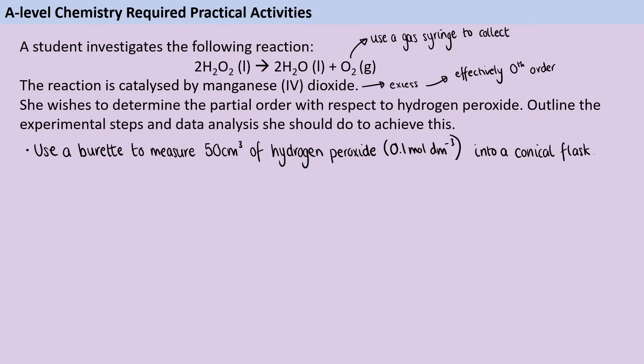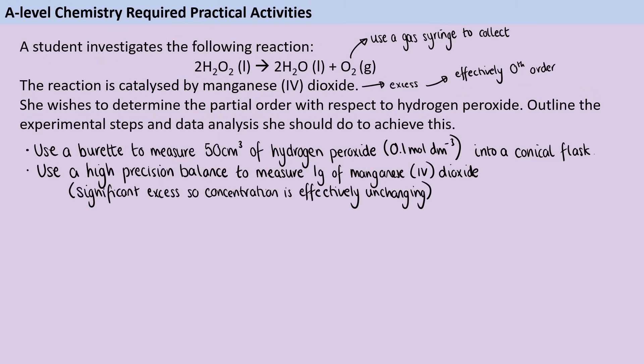Strictly speaking, we don't really care how much there is as long as there's a really large excess. But I would say that whenever you talk about measuring a mass in chemistry, it's always worth leading with using a high precision balance, even if you don't really need one, because if you get into that habit, you're not going to forget it when it is important. So we're going to use our high precision balance to measure out a gram of manganese dioxide, which is way more than you need. It's really significant excess. Therefore, the concentration is effectively going to not change during the reaction. And we can just disregard it when we're looking at the impact of the changing concentration of the hydrogen peroxide throughout the reaction.